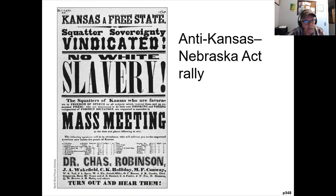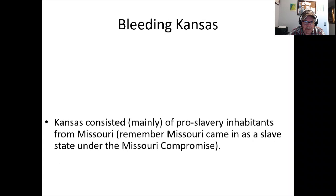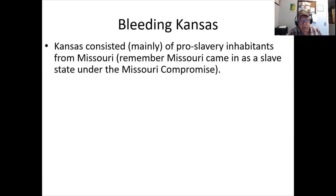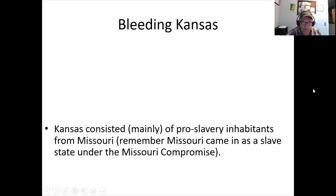The breakdown: the Compromise of 1820 is dead, and mass meetings are called to rally people either for pro- or anti-slavery to influence how state constitutions are written. Kansas becomes the flashpoint: mostly pro-slavery sentiment because Missouri — a slave state under the 1820 compromise — is right up against it, making it easy to migrate westward. Free states butt up against Nebraska, showing the tension as people move into new territory on either side.